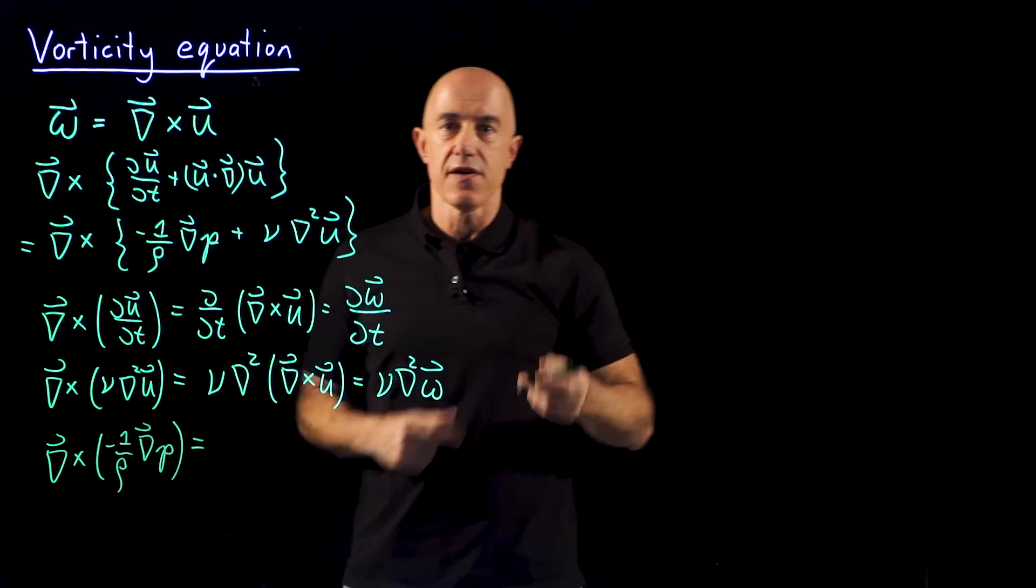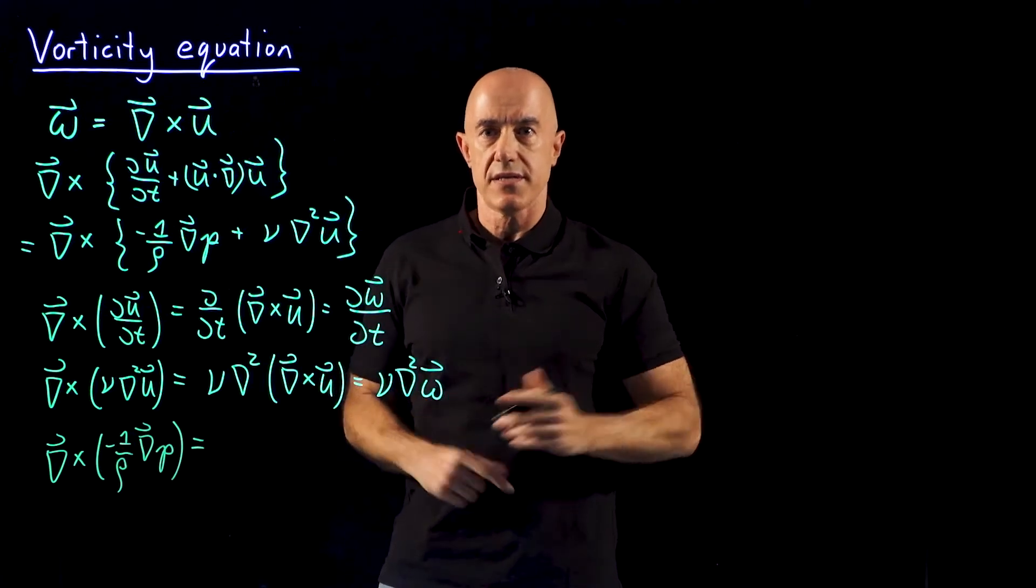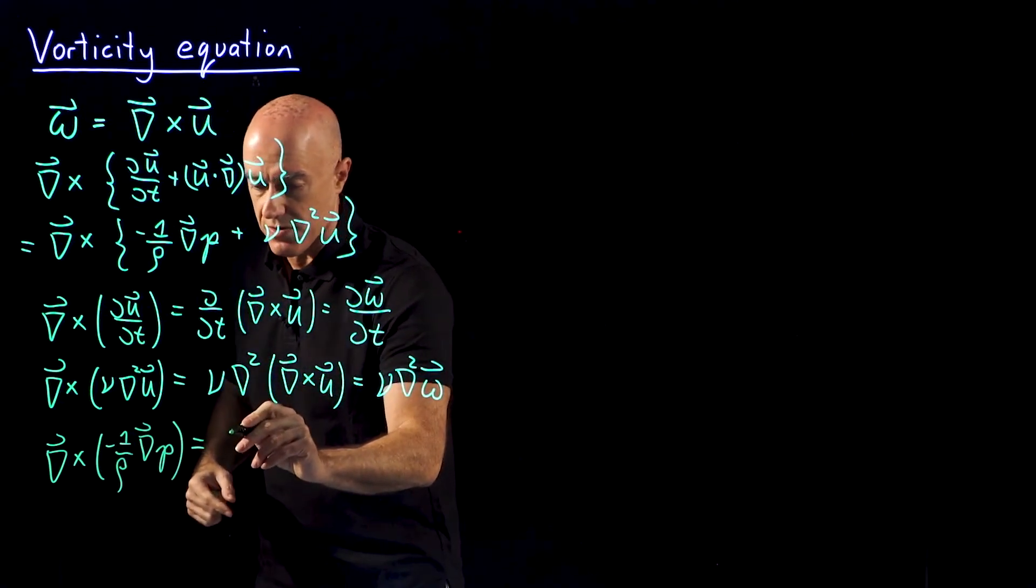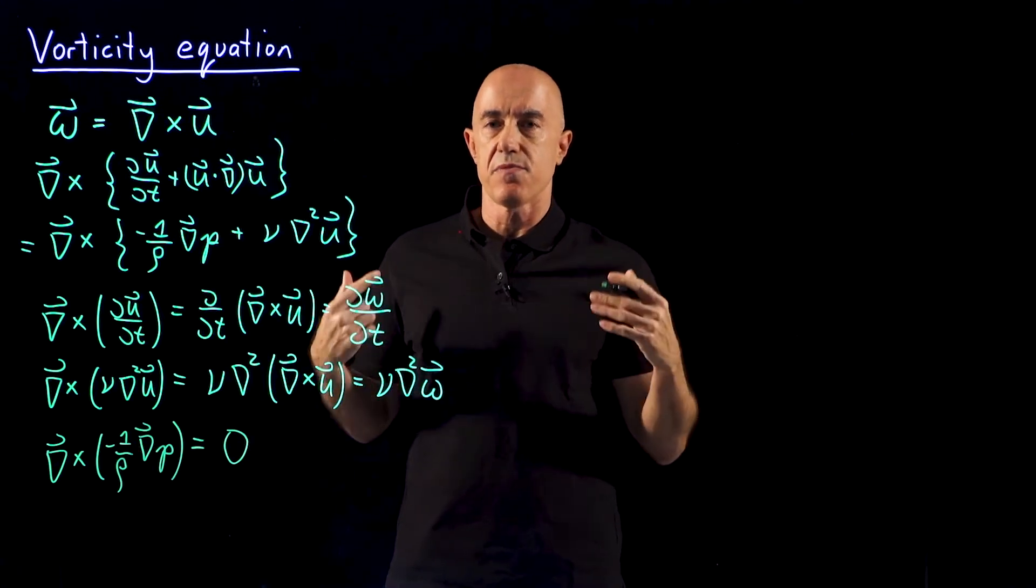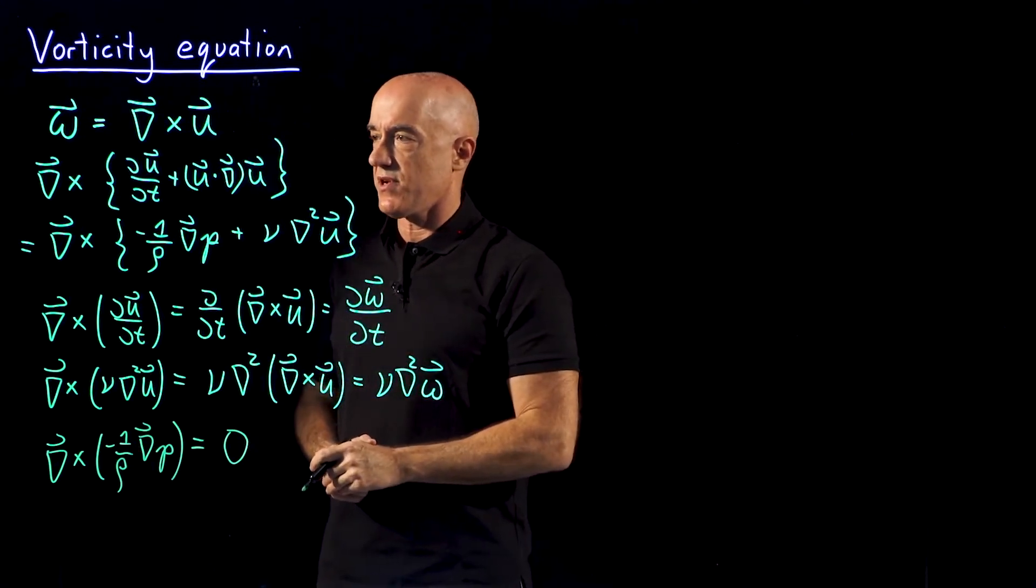Well, the curl of a gradient is always equal to 0. So this term goes to 0, which is very nice. So the pressure then disappears from the equation.